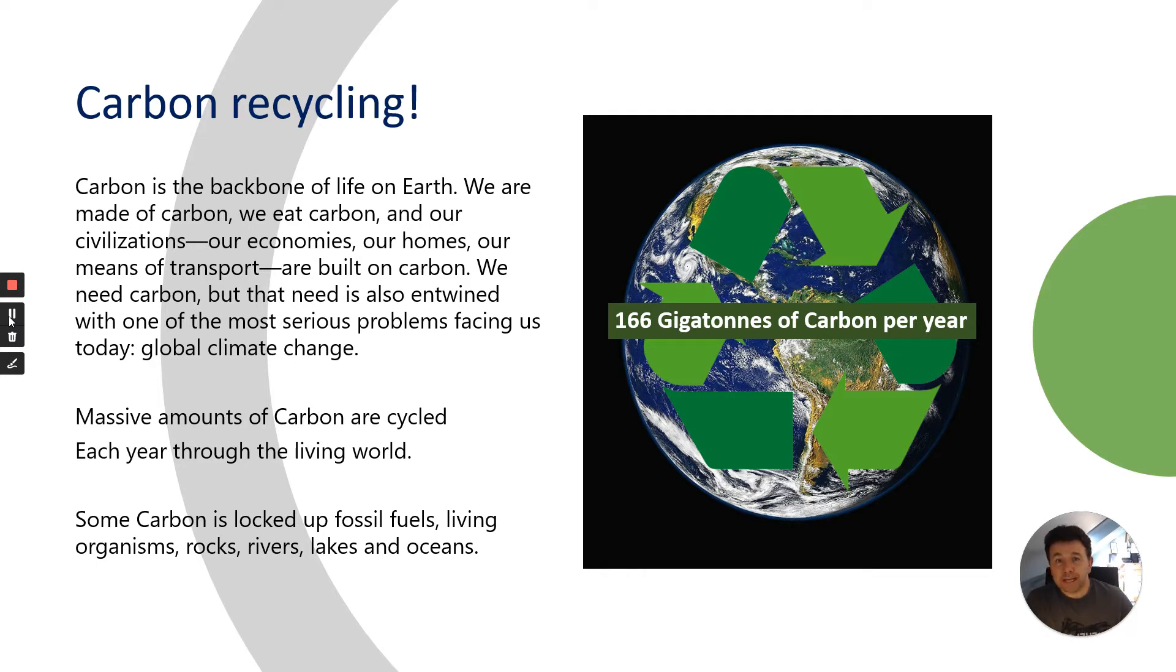Each year massive amounts of carbon are cycled. A large proportion of carbon is locked up in things like fossil fuels, trees, the oceans, rivers, and lakes. As it shows you here, 166 gigatons of carbon are cycled per year - that's a very big number.